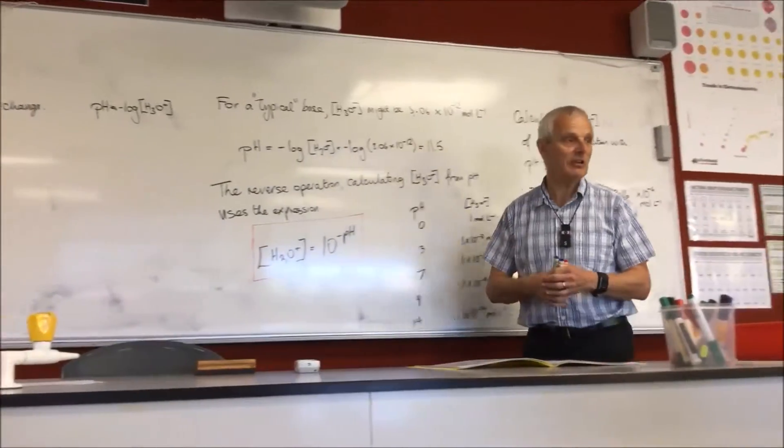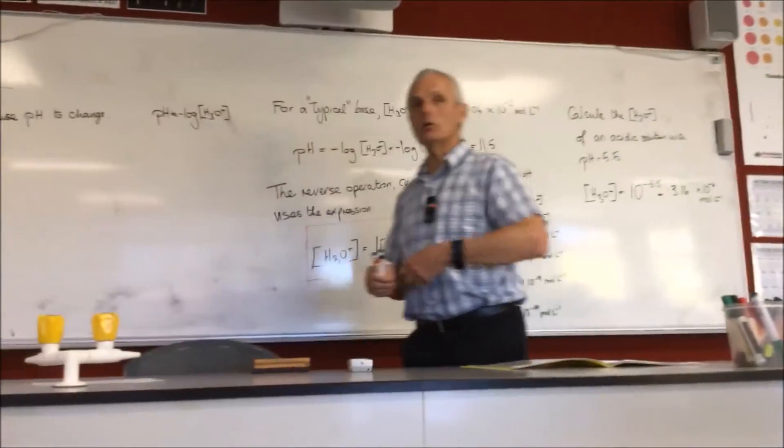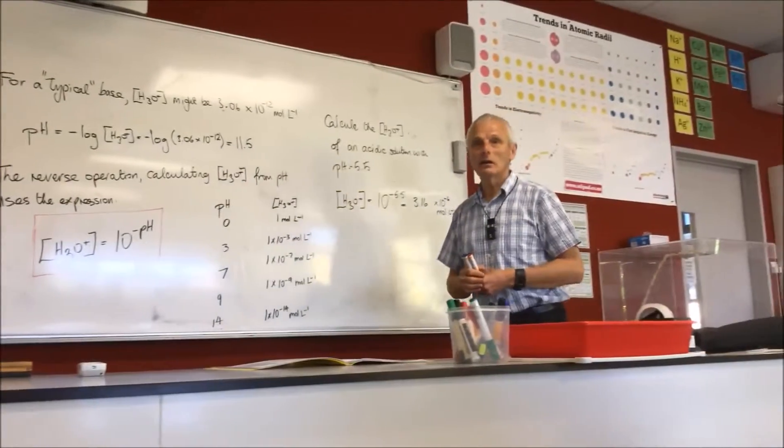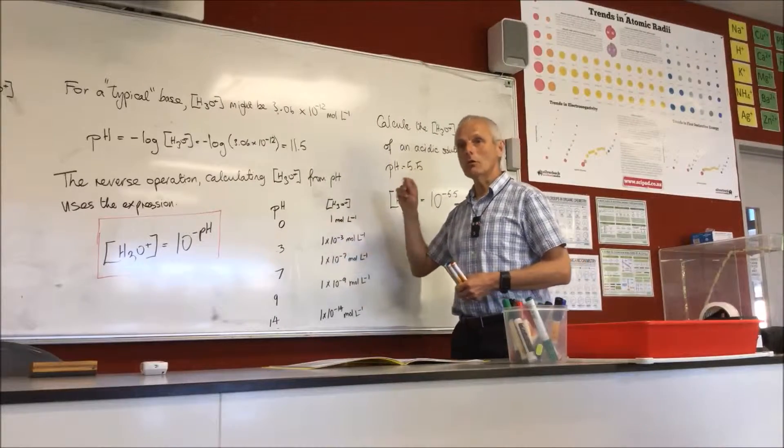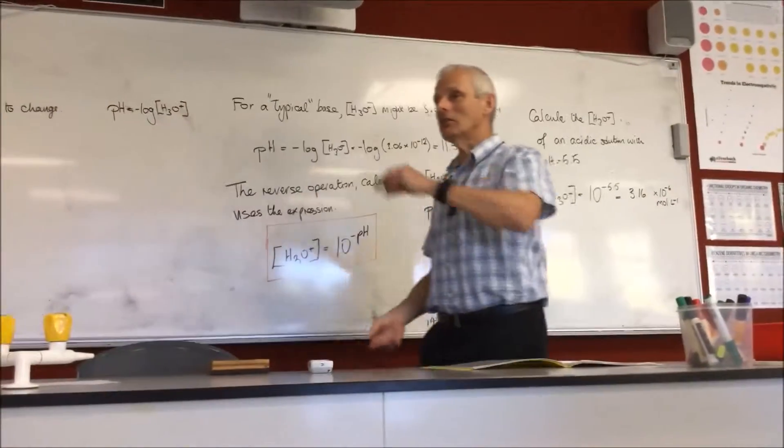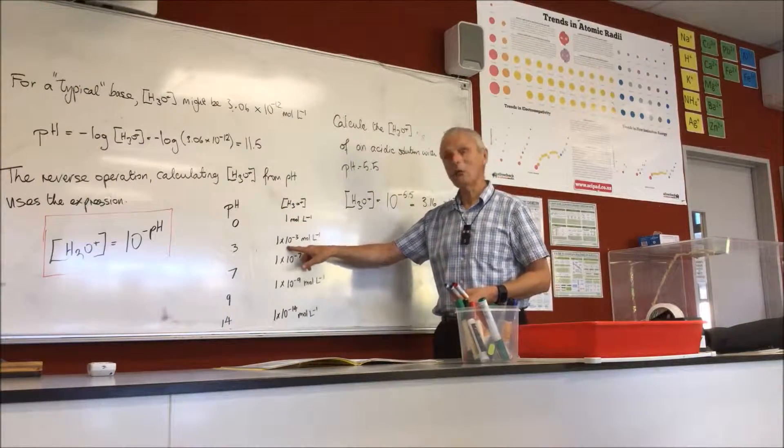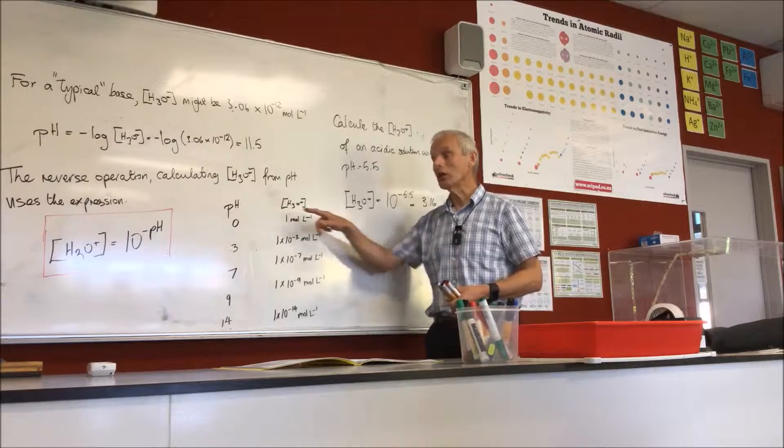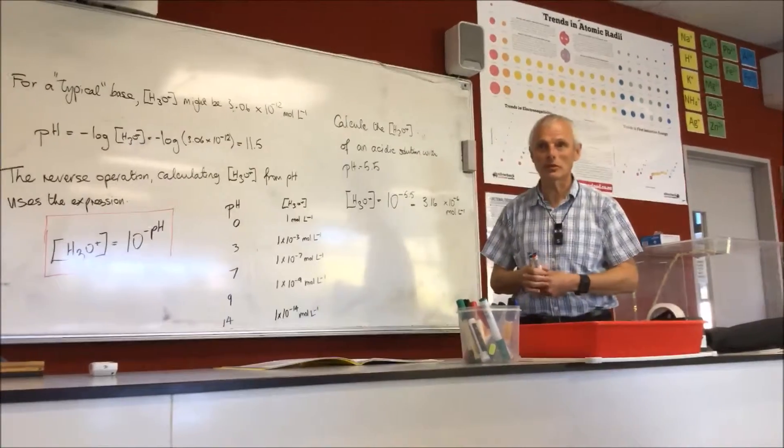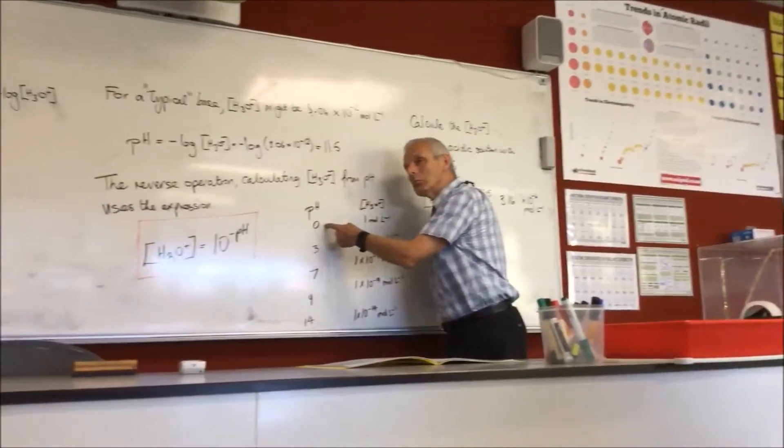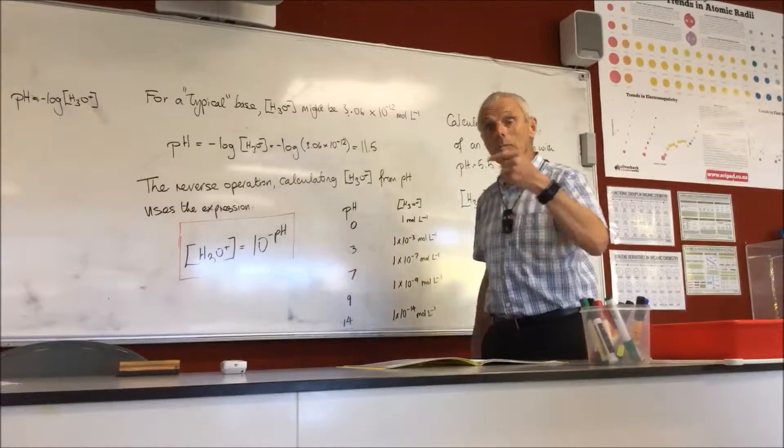So say you start with an acid, an acid with a pH of one. If you dilute it tenfold, the concentration goes down. So if we start with one mole per litre and we take one mil of that and add another nine to take it to ten mils, then we've actually diluted that by a factor of ten. So it's now one times ten to the minus one, which will tell you the pH is two.